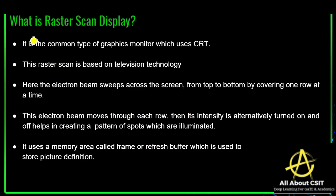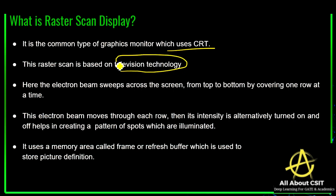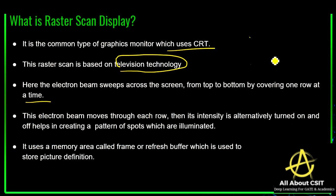So first let's see what exactly the raster scan display is. It is a common type of graphics monitor which uses the CRT. This raster scan is based on television technology. Here the electron beam sweeps across the screen from top to bottom, covering one row at a time — unlike random scan which draws one line at a time.